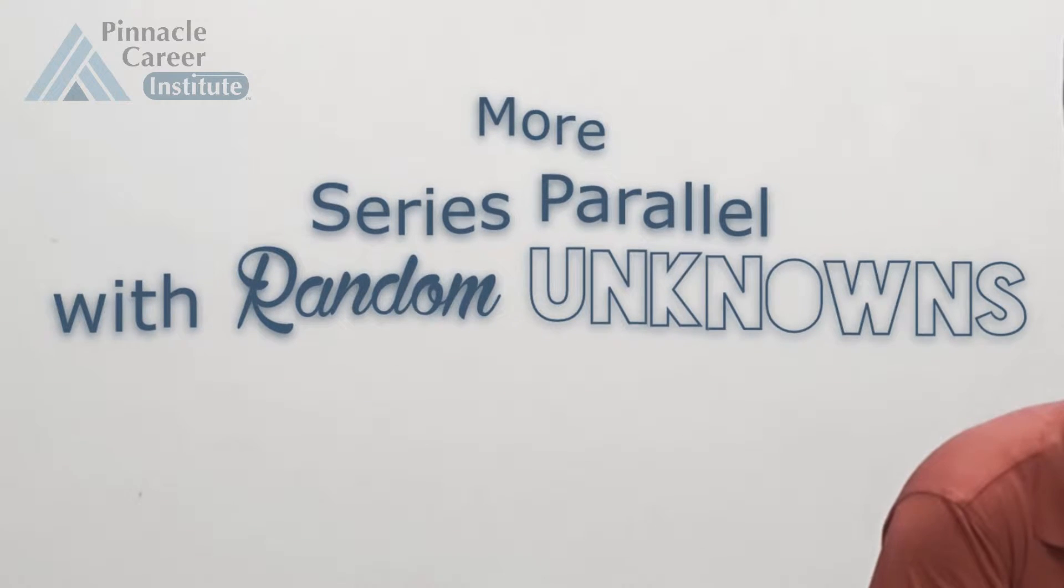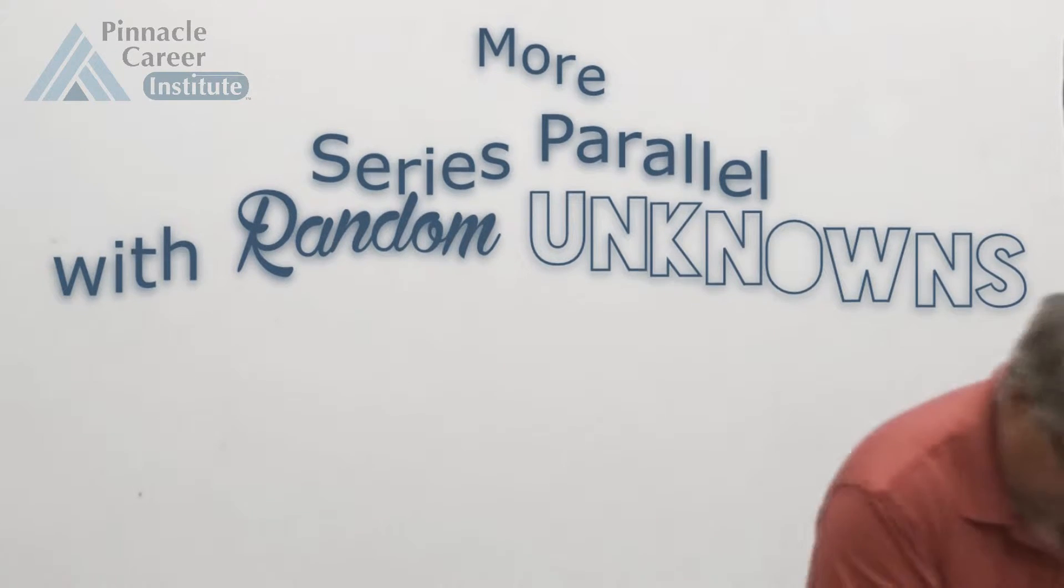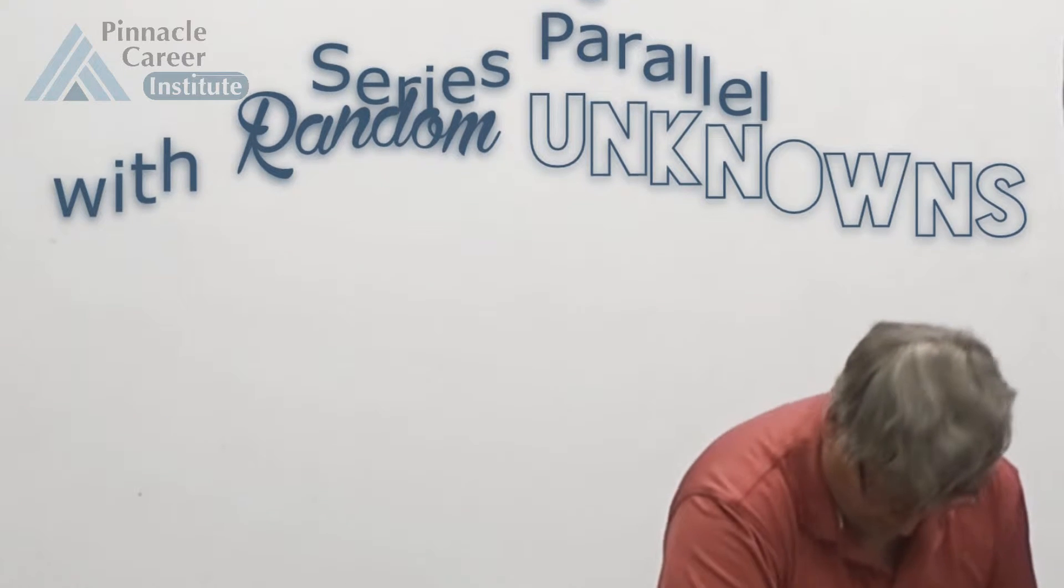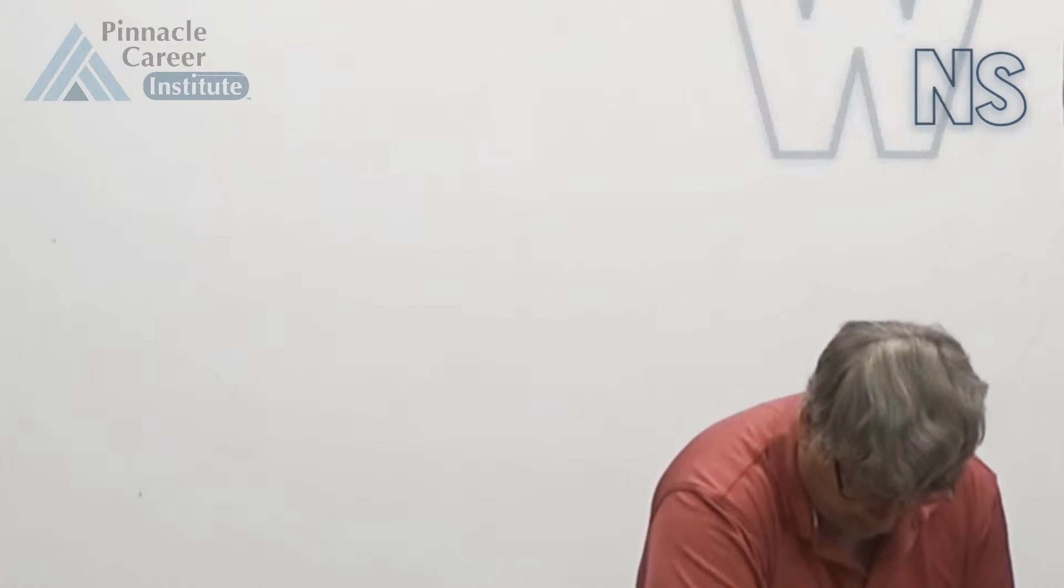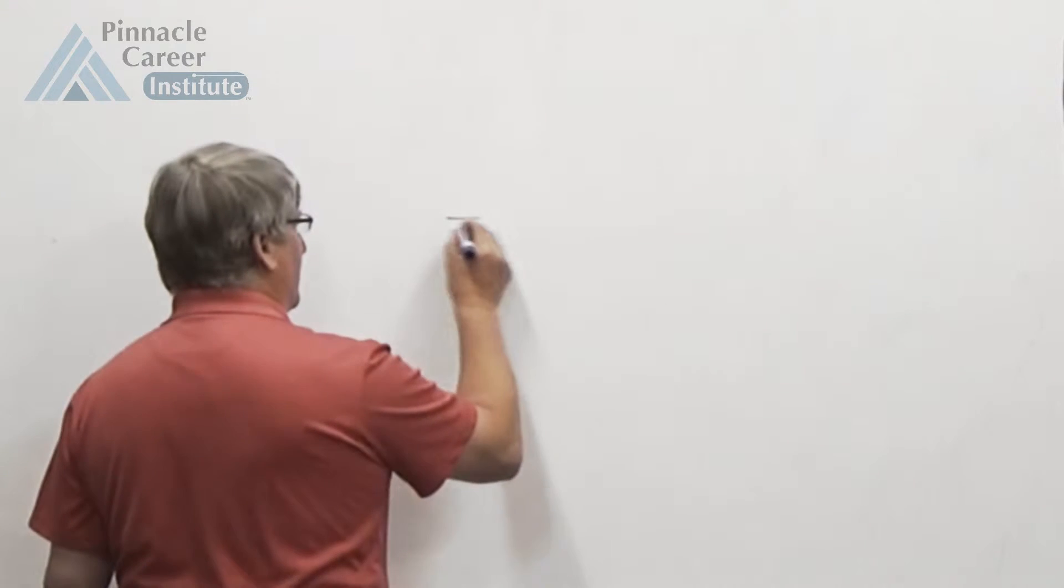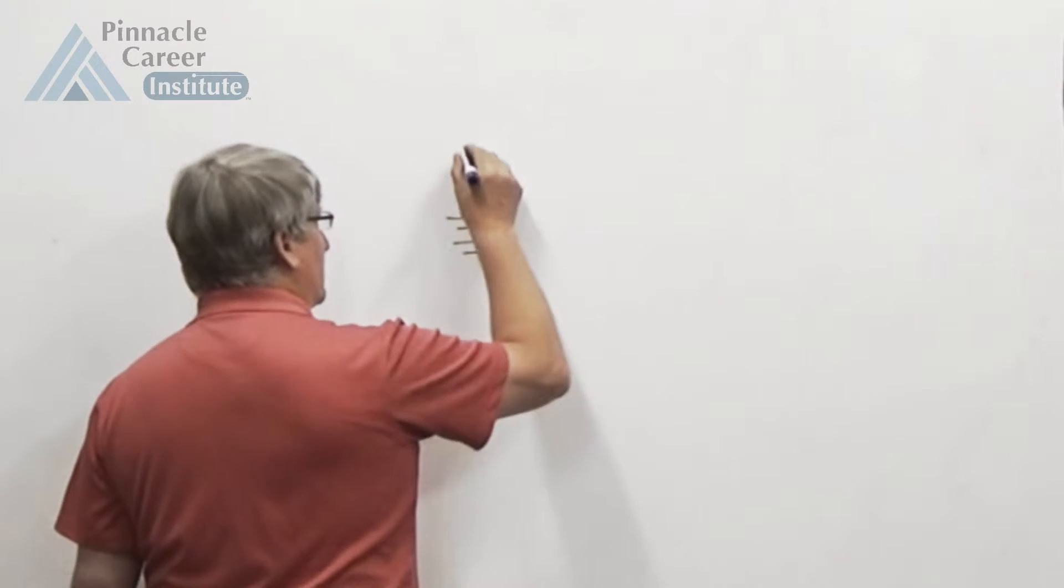Alright, so that was 6-6. Now we're going to do a different one, figure 6-7. You got two branches, each with two resistors, and we have different pieces of information. So let's draw this.